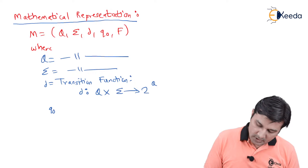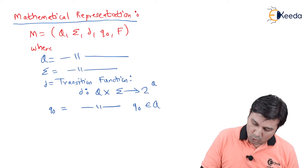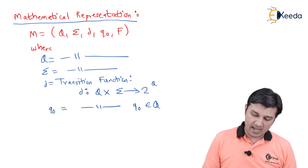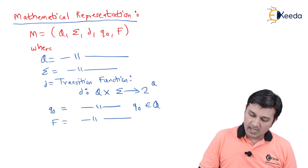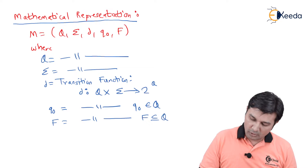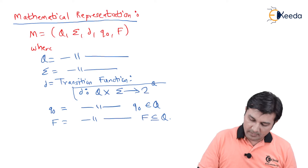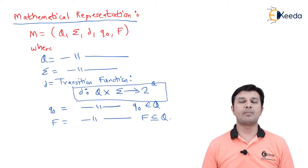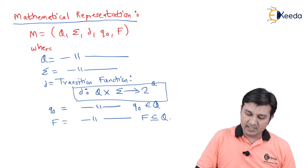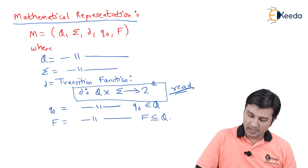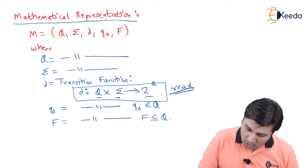Going ahead, I have q0 which is called as the start state, and q0 belongs to Q — same as that of DFA. Last I have F which is called as the finite set of accepting or final states, and F is a subset of Q. What you have not fully understood from this mathematical representation is the part Q × Σ → 2^Q. To make that simple: given a state and an input symbol, what are the possible sets of outputs?